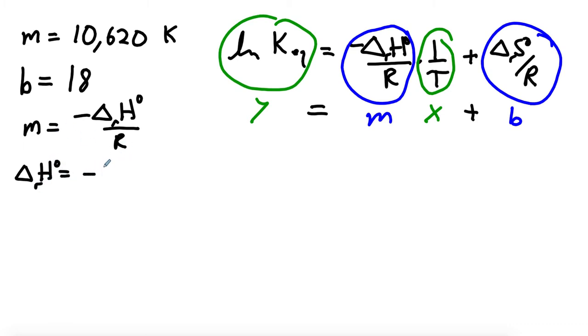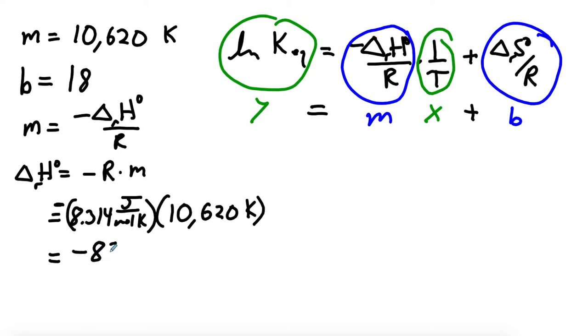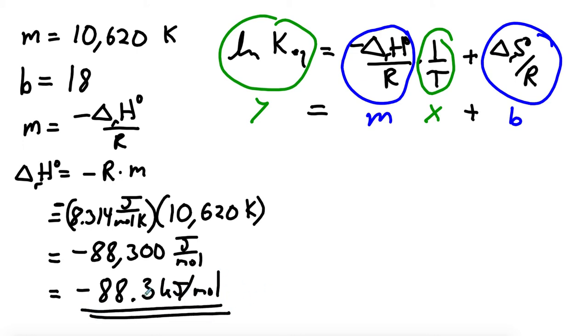So we solve for delta H standard by multiplying both sides by negative R. Then we just plug in the numbers: 8.314 joules per mole per Kelvin, our slope which was 10,620 kelvins, and don't forget the negative sign. That comes up to negative 88,300 joules per mole. Rounding to 3 sig figs, delta H is negative 88.3 kilojoules per mole. The units come out to what we're expecting for the heat of a reaction, kilojoules per mole.